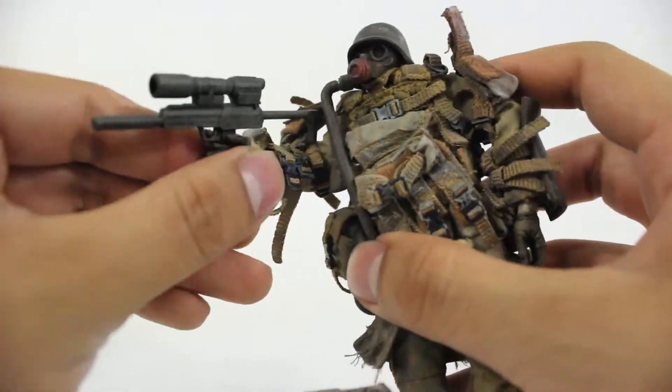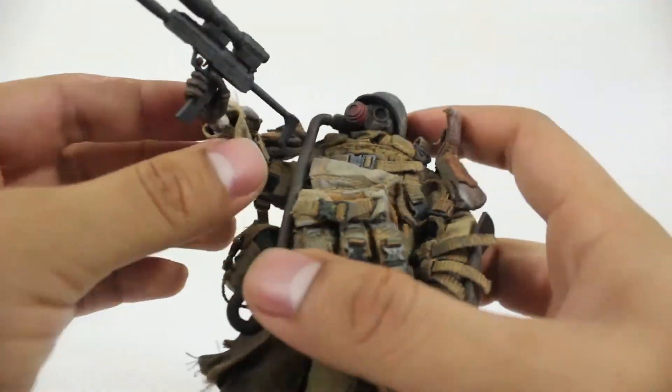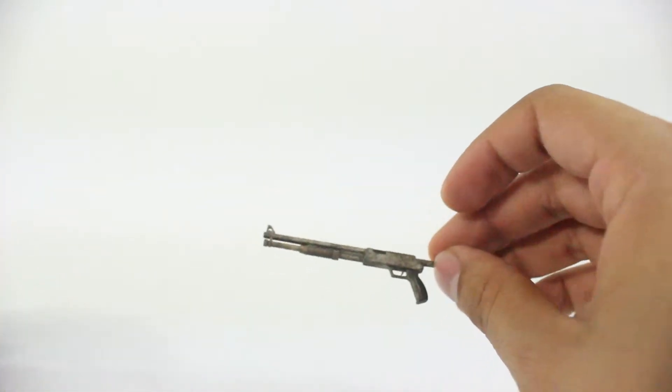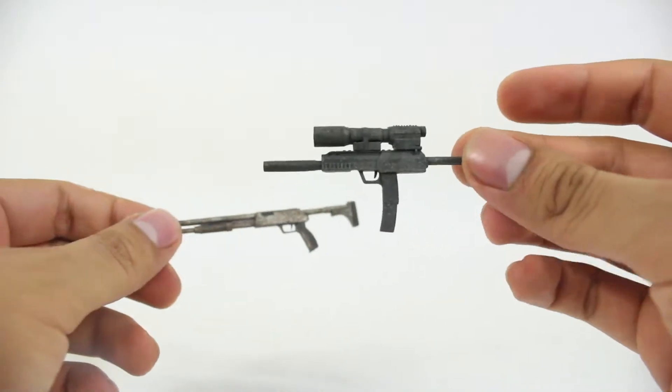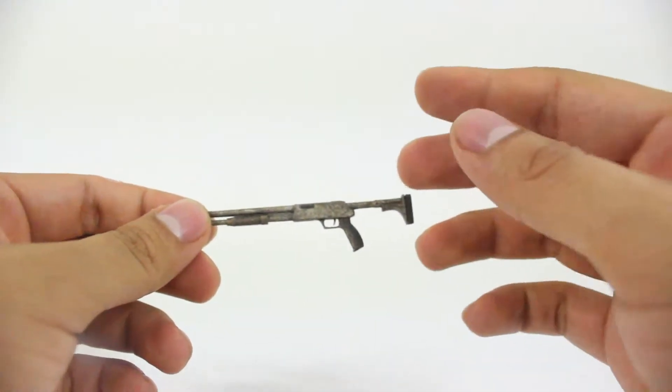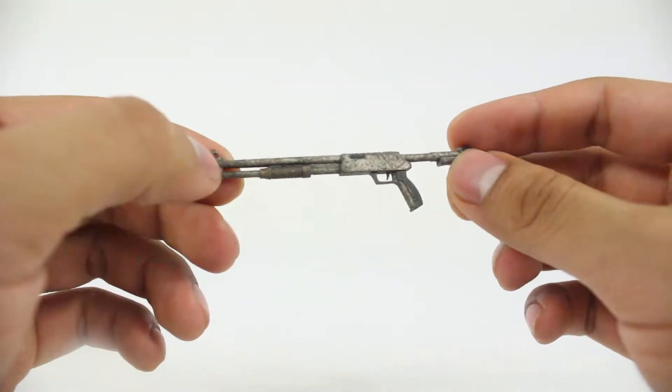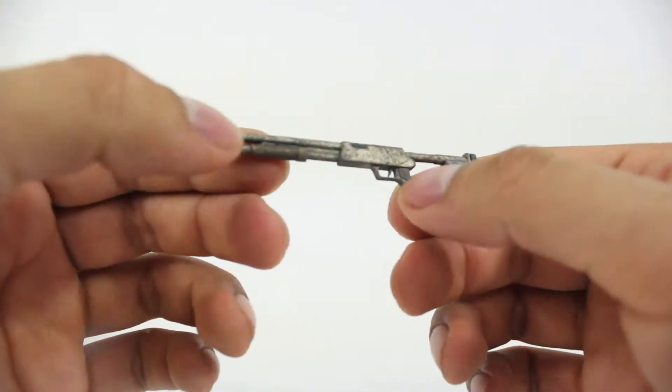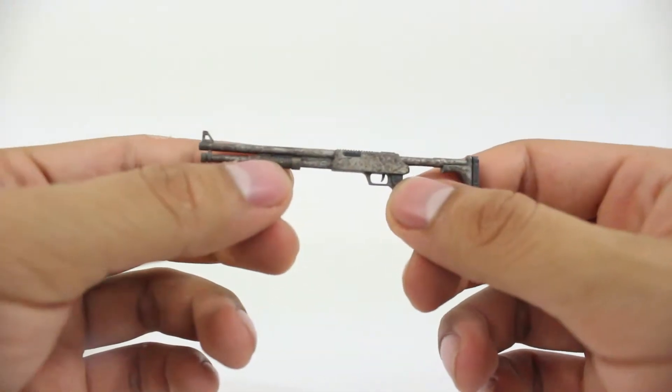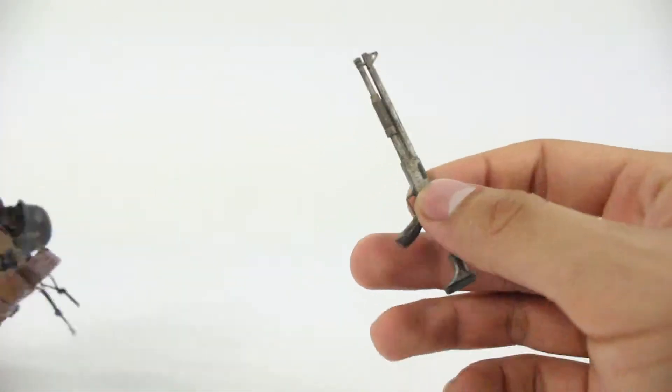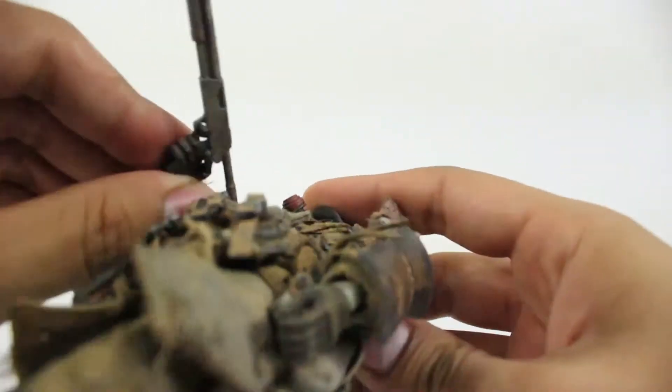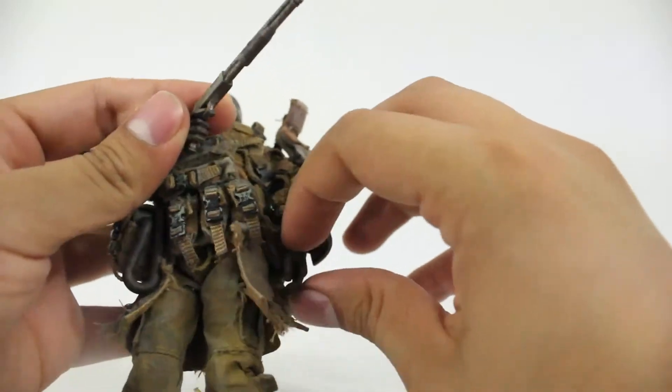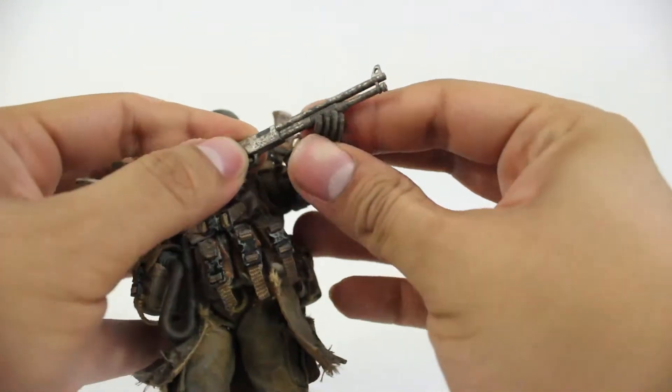They hold it really well. His hand has a trigger finger so it's basically ready to start shooting, and it fits right in there perfect. So yeah, that's the first accessory they come with. The second is the shotgun that all the grunts come with. We've got the shotgun, nothing moves on it. The pump looks nice though.